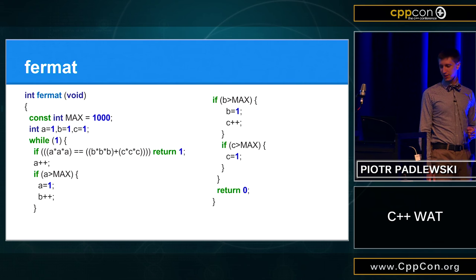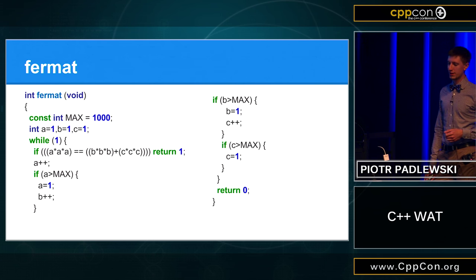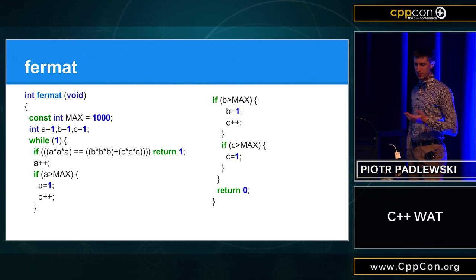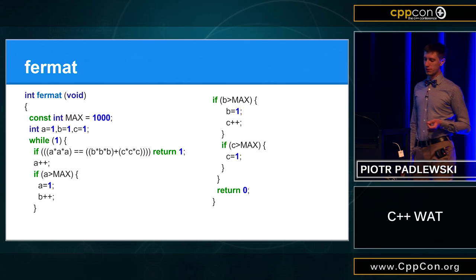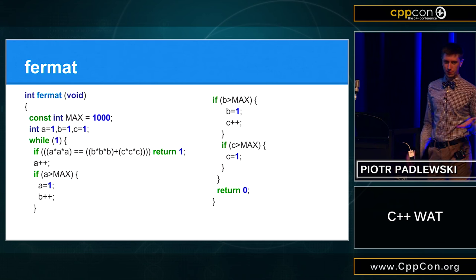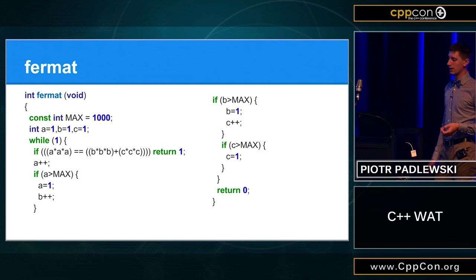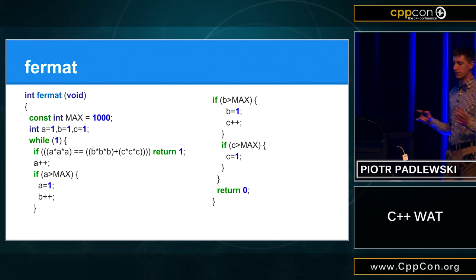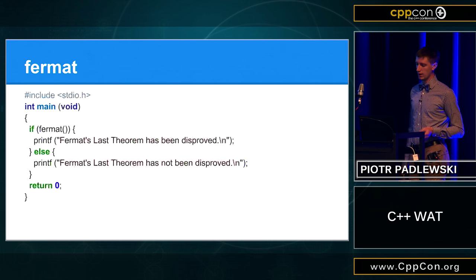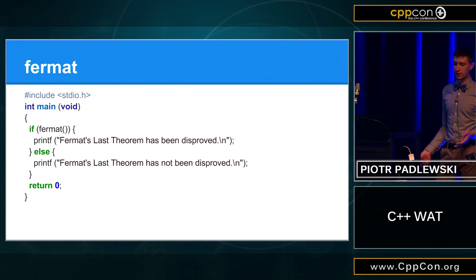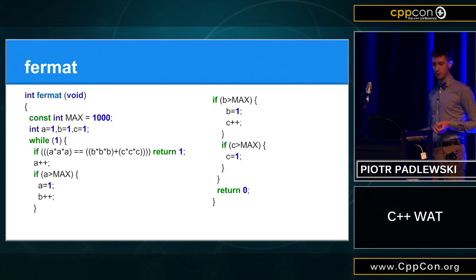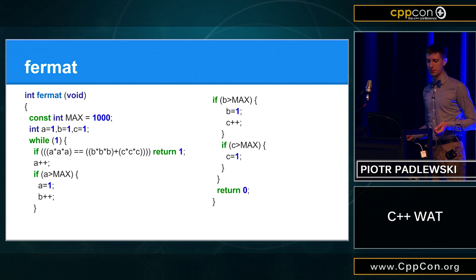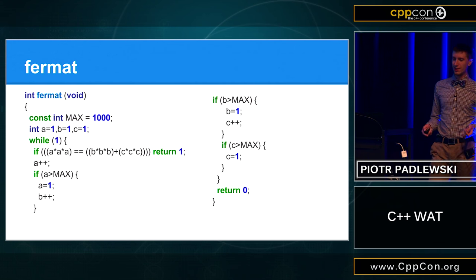Okay. So, this code, we will check if Fermat's law applies. So, we have three integers, we have a loop that will never end. Right? If, of course, if the law works. And this code doesn't have any undefined behaviours. There is no integer overflow, anything like this. And if we will call this function and say, like, okay, Fermat's law, if we will return one, that means that Fermat doesn't work, right? And we will probably never return zero, because this is an infinite loop.